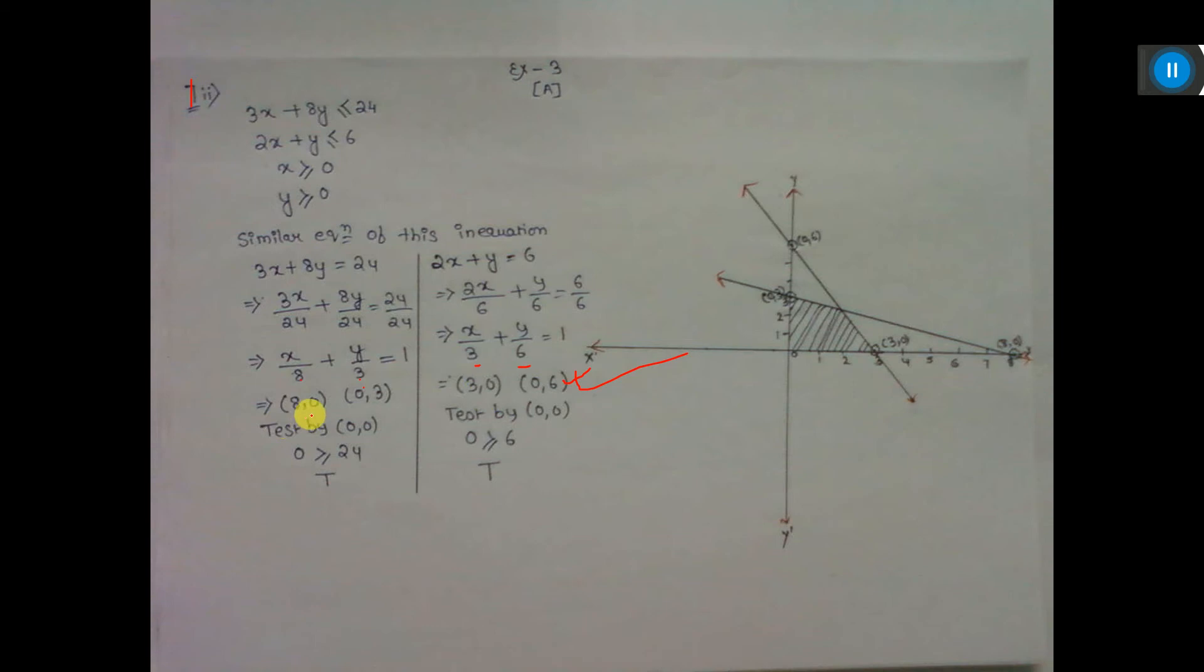So, after putting 8, 0 and 0, 3, see: 1, 2, 3, 4, 5, 6, 7, 8. Mark 8, 0 and 0, 3: 1, 2, 3. Join the points and draw a line.